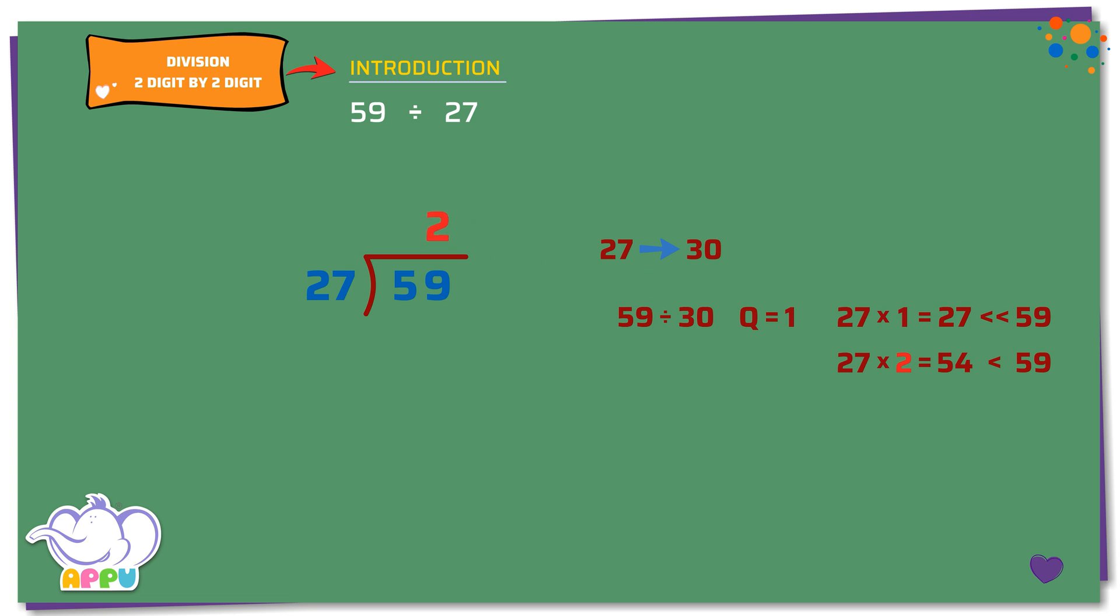Step 2: We multiply 27 and 2, we get 54. Step 3: We subtract 59 minus 54 equals 5. We stop division because 5 is less than 27. So, the quotient is 2 and the remainder is 5.